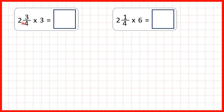Now let's multiply a mixed number by a whole number. We have 2 and 3 quarters times 3. The way to do this is to look at the mixed number and first multiply the whole number part, so work out 2 times 3, then multiply the fraction part, so work out 3 quarters times 3, and then add up the answers.